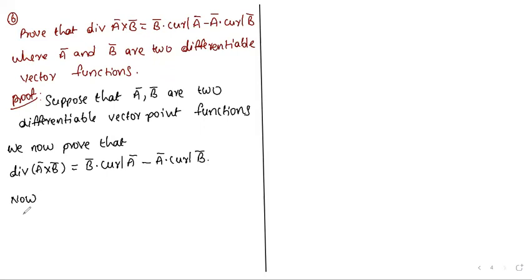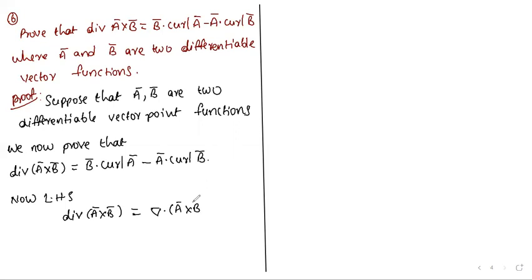Consider the LHS: div(Ā cross B̄), which equals del·(Ā cross B̄). This can be written as summation of i-bar·∂/∂x(Ā cross B̄).